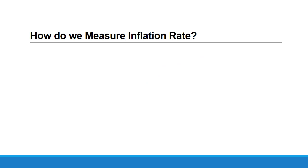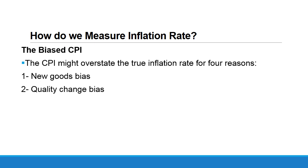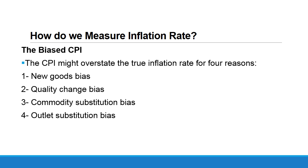However, CPI is not a perfect measure of the inflation rate. CPI has some biases and may overstate the true inflation rate for four reasons. First, new goods bias: CPI ignores that new goods are higher in price than old ones. Second, quality change bias: CPI does not account for the fact that higher quality implies higher prices. Third, commodity substitution bias: CPI ignores that consumers may substitute away from expensive goods to cheaper ones. Fourth, outlet substitution bias: CPI ignores that consumers may shift from expensive outlets to cheaper ones when prices are rising.